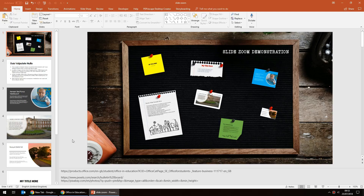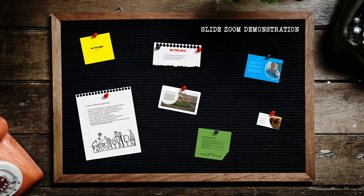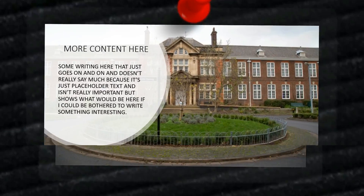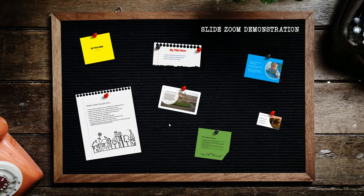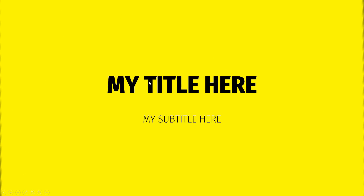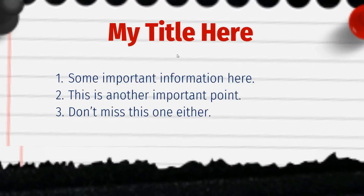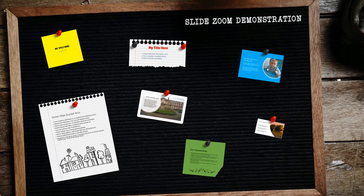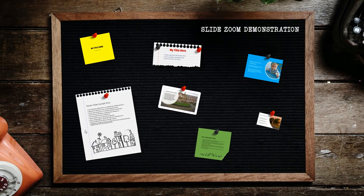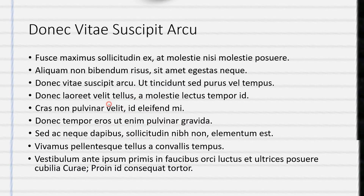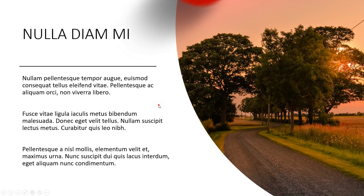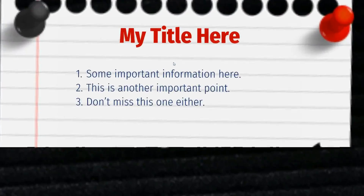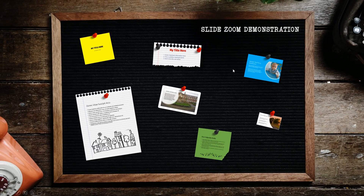I have a presentation here already set up with a notice board on the first slide. If I run the presentation, the notice board appears and all of these individual notices are in fact slides in my presentation. I can click on any one of them to zoom in and view that particular slide in any order. That's the zoom feature in PowerPoint — a really cool and interesting way of displaying information to your audience.